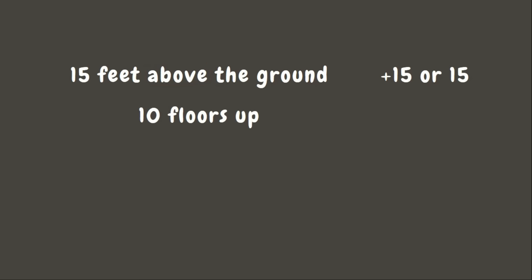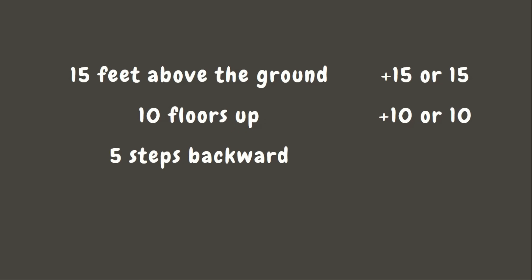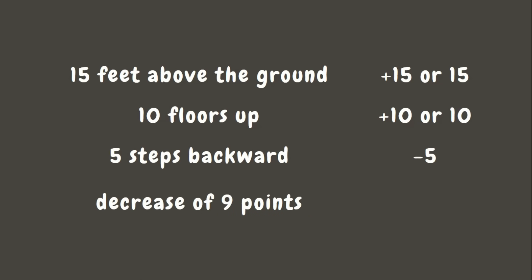Another one: 10 floors up. Our keyword here is the word 'up,' which means that it is positive 10. Next one: 5 steps backwards. Our clue word here is the word 'backward,' meaning that we are going to move 5 steps backward, so that is negative 5. And lastly, we have a decrease of 9 points, which can be represented by negative 9.